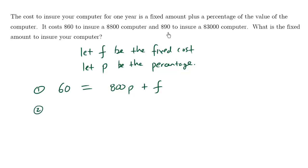Similarly, it costs $90 for a $3,000 computer, and we take a percentage of that to generate 90, plus the same fixed amount. This here is the hard part, and if you define your variables correctly, you should be able to build it up.